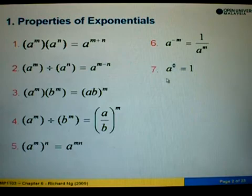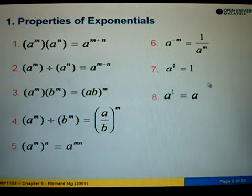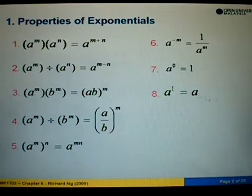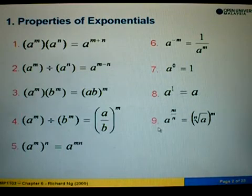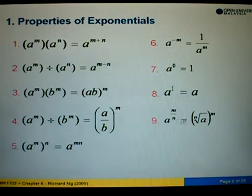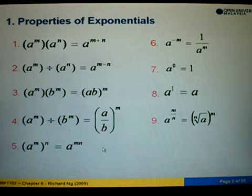In formula number 7, any number to the power 0 always equals 1. Formula number 8: any number to the power 1 gives back that number again. And lastly, formula number 9: if the power is a fraction, the denominator becomes the root and the numerator remains as the power. Let's see how to apply these formulas.